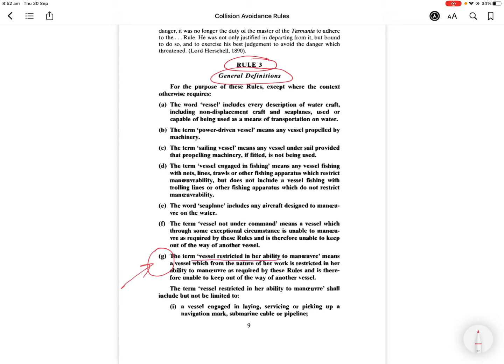Which means a vessel which from the nature of her work—now this is the important bit that the court highlighted—nature of her work is restricted in her ability to maneuver as required by these rules and therefore unable to keep out of the way of another vessel. Now this was the key phrase that the court highlighted.